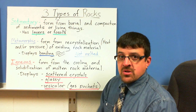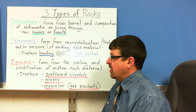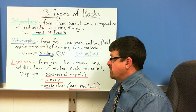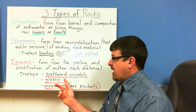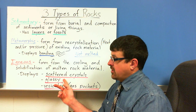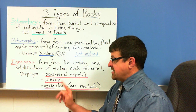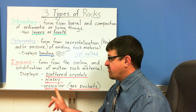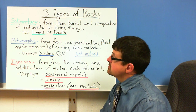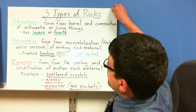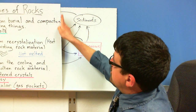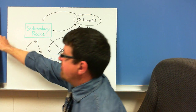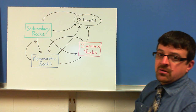Igneous rocks are the ones that have been melted. They come from the cooling of magma or lava and are the solidification of that material. In igneous rocks you're going to get scattered crystals. Glassy texture could be very shiny and glassy, and vesicular just means they have gas pockets. Those are the three types of rocks.